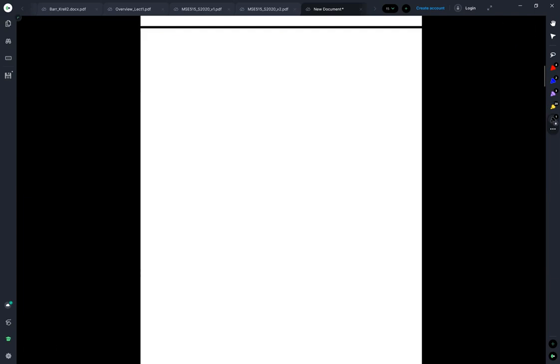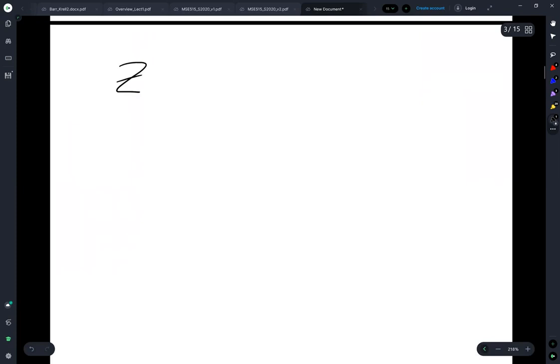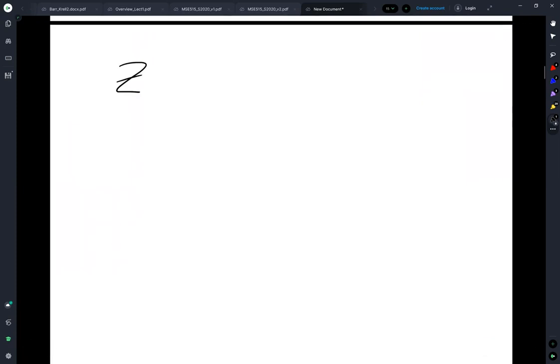So, say you have some function z, and z is a function of x and y. And this is some state function.